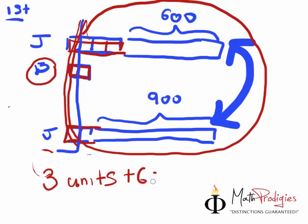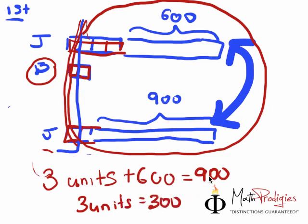Which means that 3 units equals to 900 minus 600, which equals to 300. Good job. And 1 unit equals to 100. And then from there you can find out how many Judy has. Judy has 1, 2, 3, 4 units which equals to 400 plus 600 which equals to 1000, and Bobby has 200, 1 unit and 2 units. That's how you find the answer.